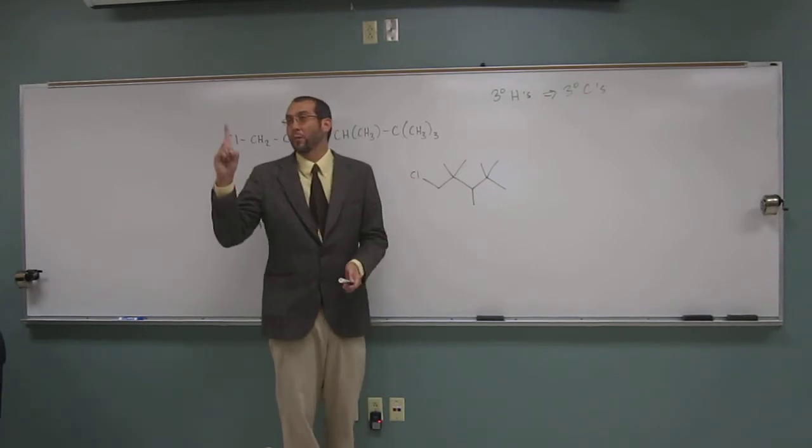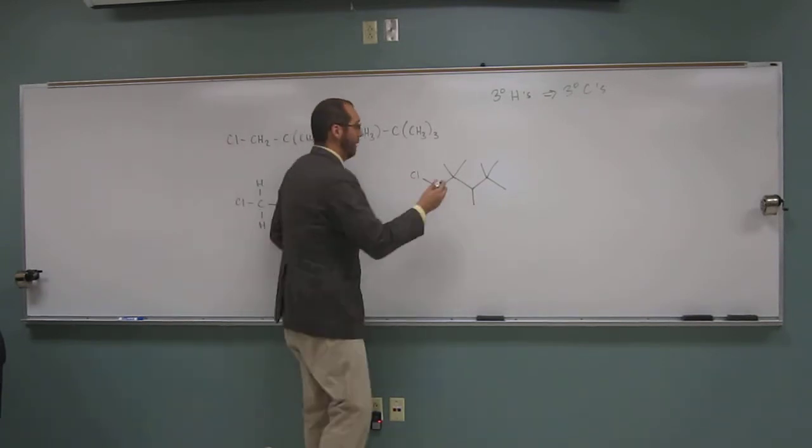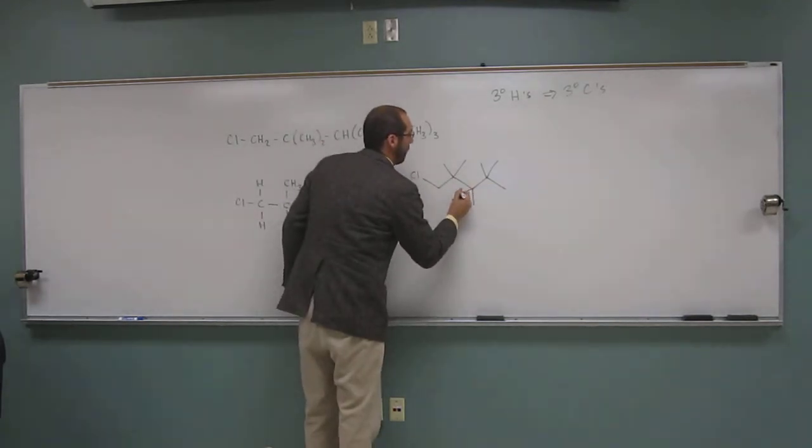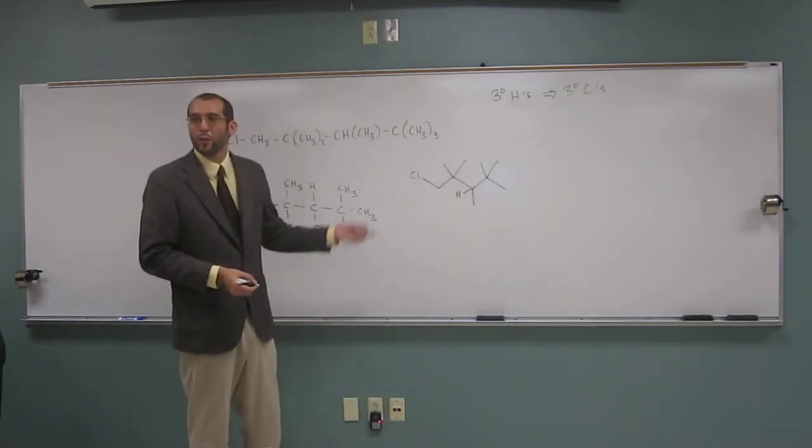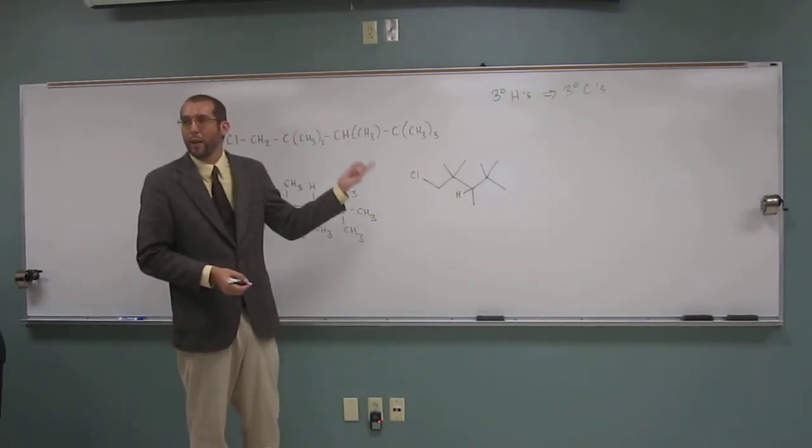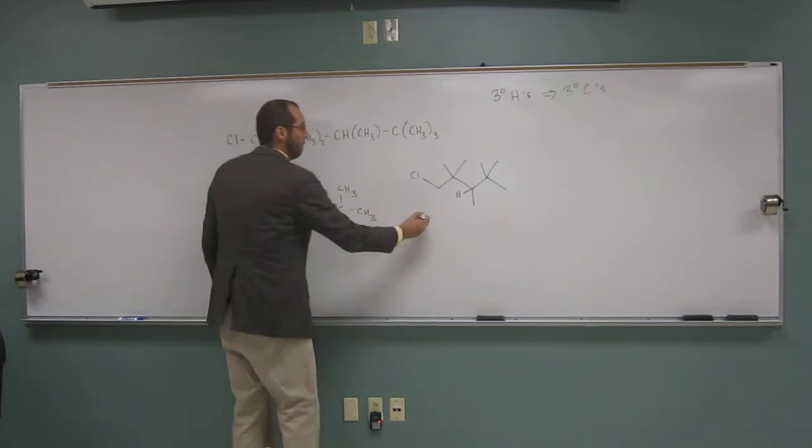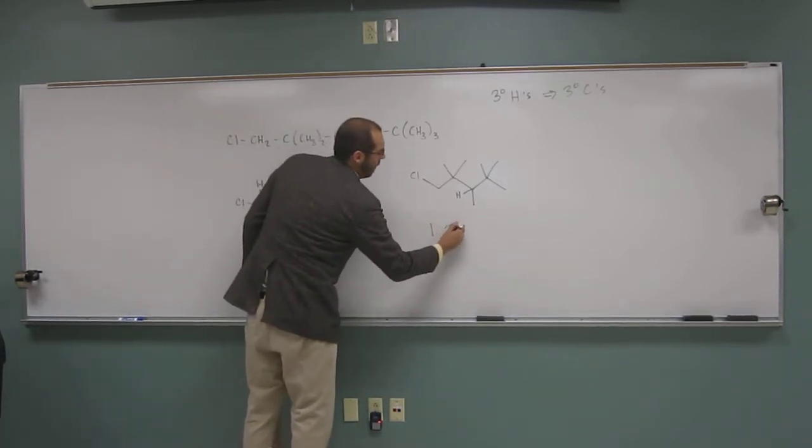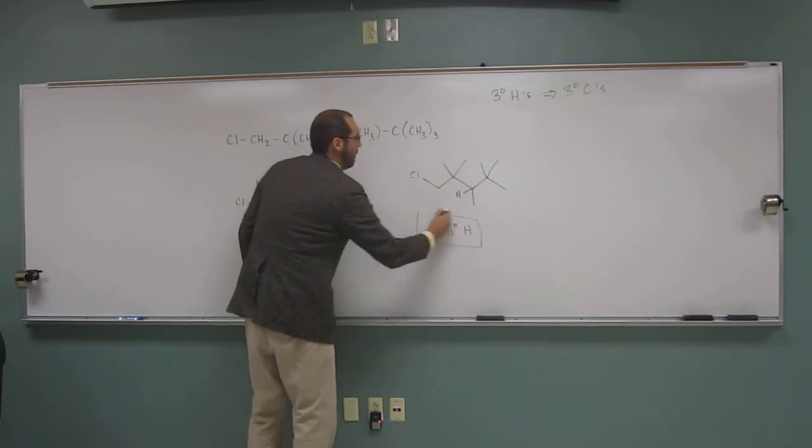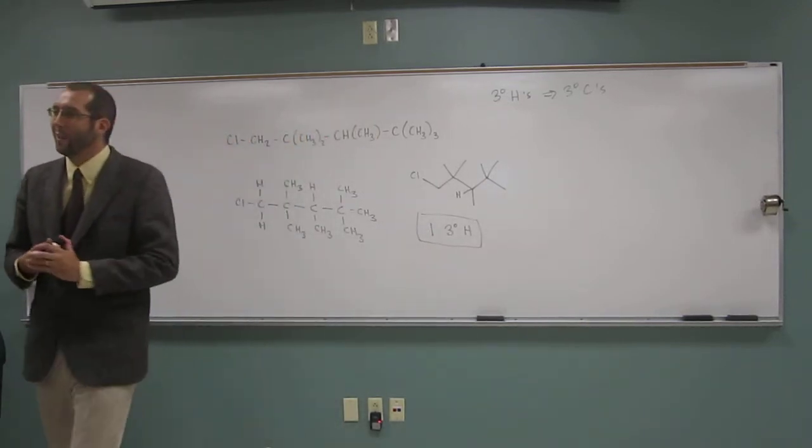So there's only one tertiary carbon. And tertiary carbons only have one hydrogen on them each. And let's just draw it out. So the total number of tertiary hydrogens in this molecule is one.